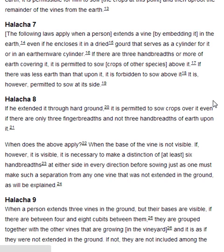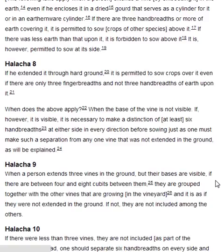Halakha 8. If he extended it through hard ground, it is permitted to sow crops over it, even if there are only three fingerbreadths and not three handbreadths of earth upon it. When does the above apply? When the base of the vine is not visible. If, however, it is visible, it is necessary to make a distinction of at least six handbreadths at either side in every direction before sowing, just as one must make such a separation from any one vine that was not extended in the ground, as will be explained.